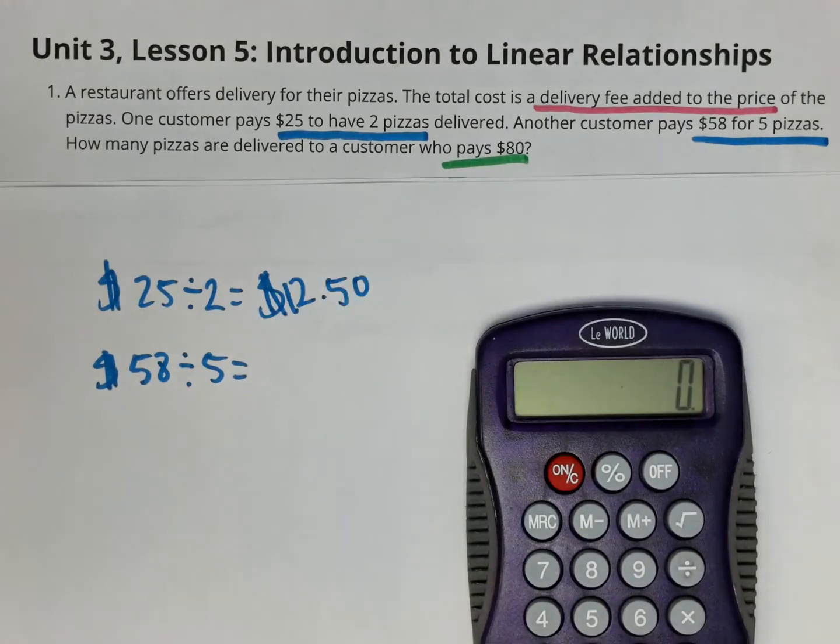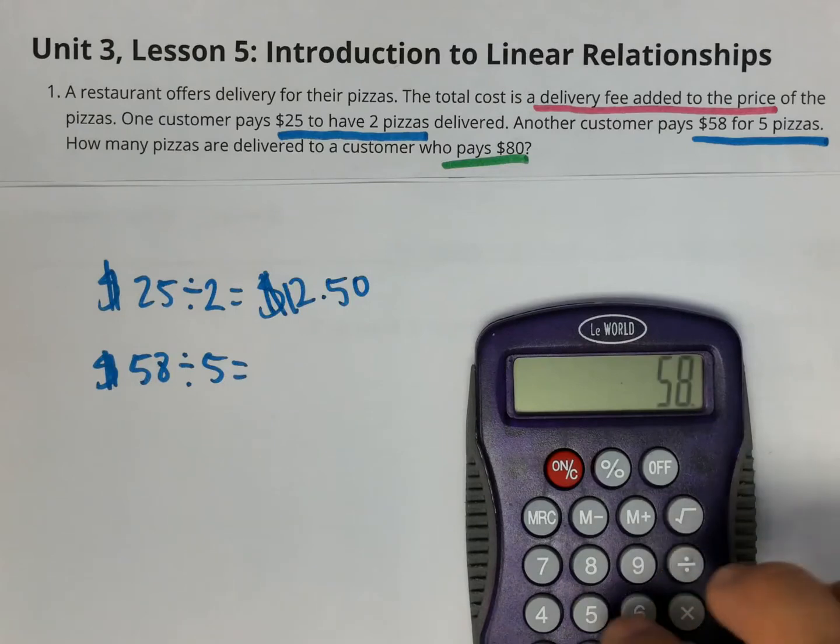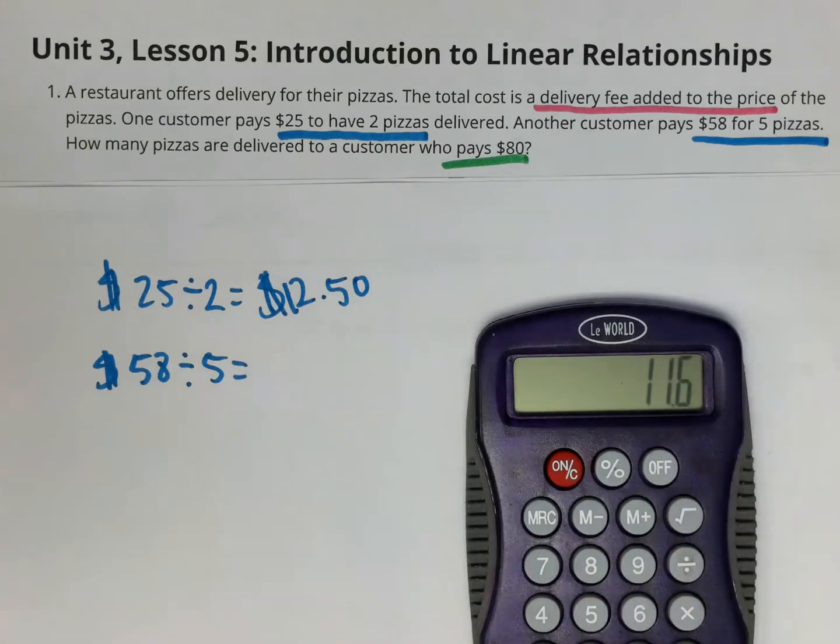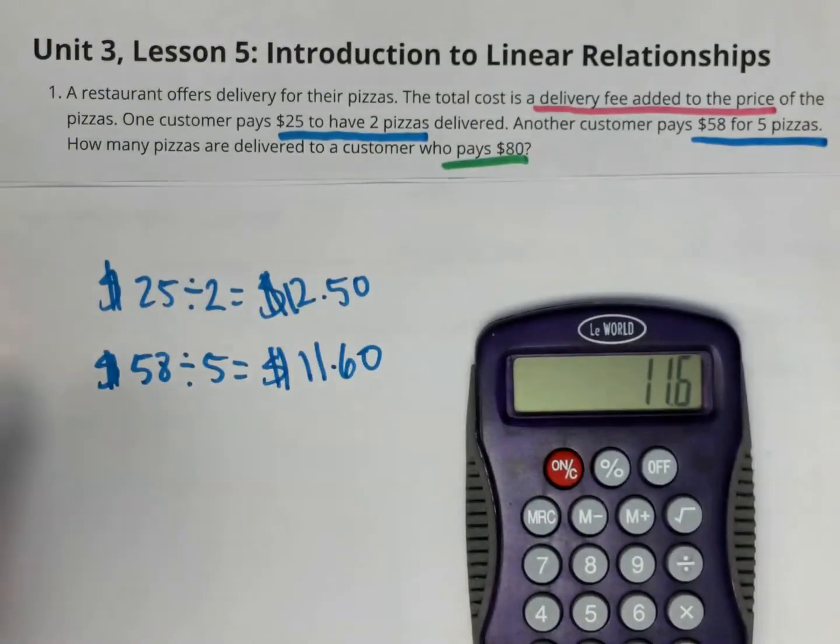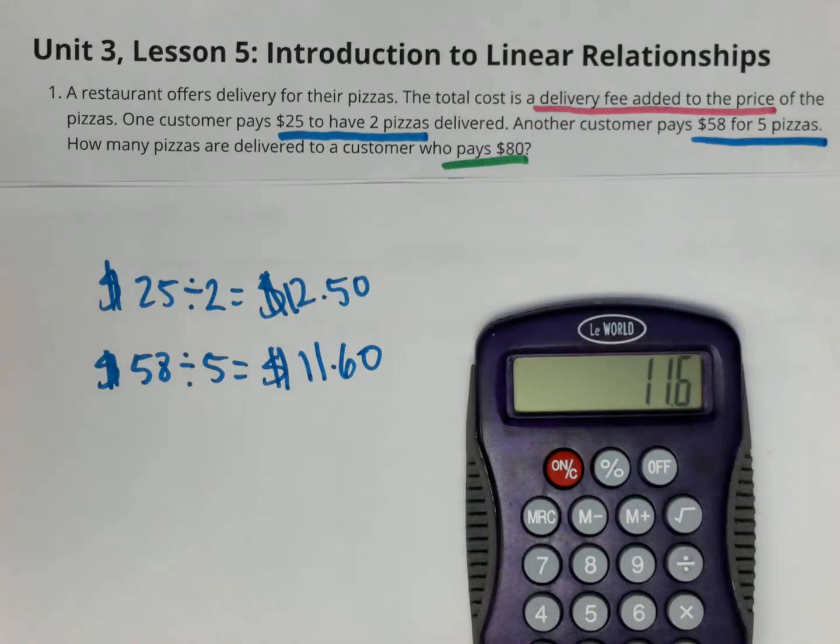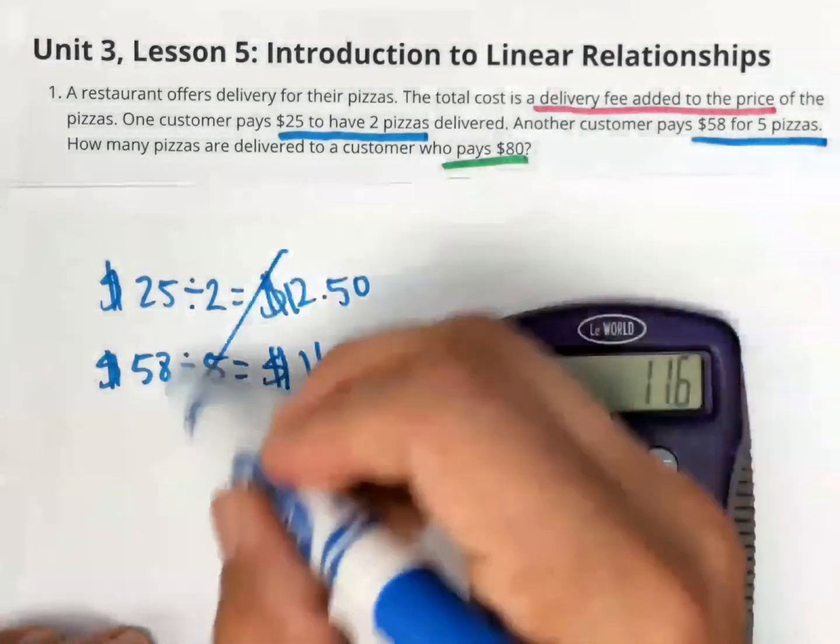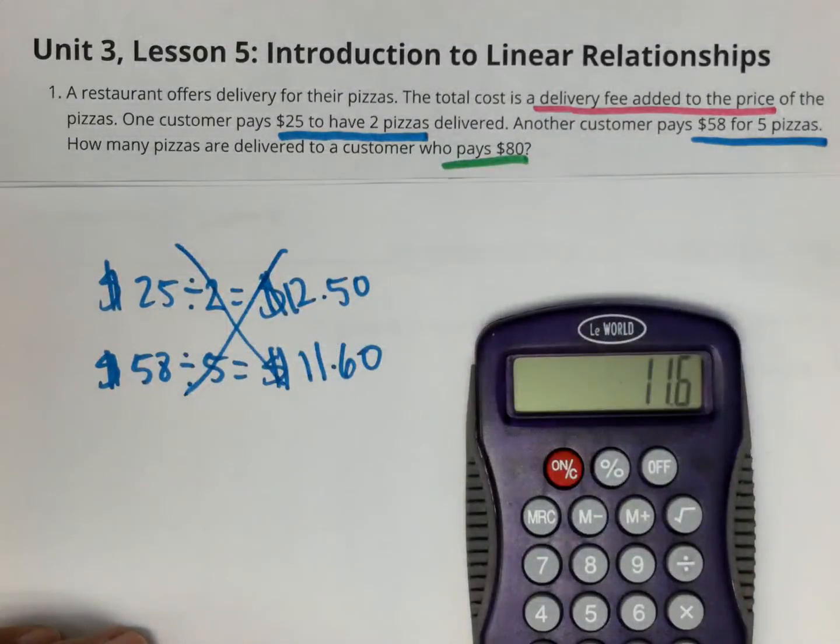When I do the other division, 58 divided by 5, I get $11.60. And I want you to see here, these are not the same price. So there is no unit rate. There is no constant of proportionality. So this is not proportional. We cannot use a multiplying pattern to find the number.